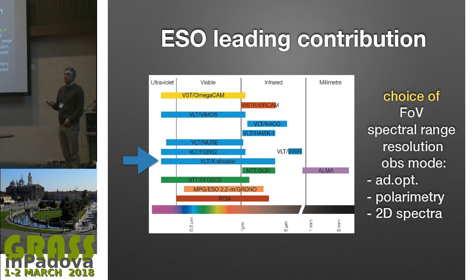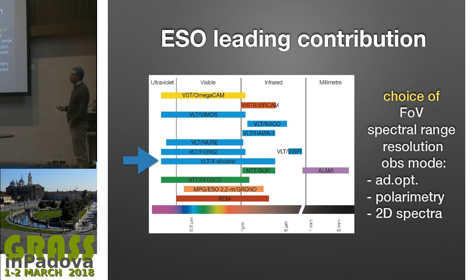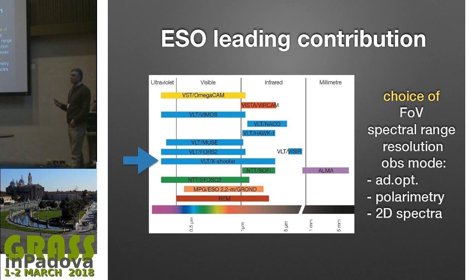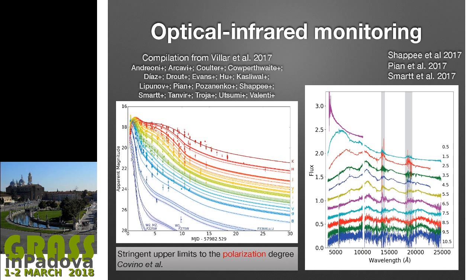When we identified this transient, Europe had access to a huge selection of instruments—this is just the ESO choice of available instrumentation between Paranal and La Silla. You can choose from visible, spectral resolution, polarimetry, whatever you want. But what made the difference was one single instrument: the VLT X-Shooter. It is unique—there are no other similar instruments around—and we were very lucky to have an approved proposal for this single instrument; otherwise we would not have been able to do what was done.